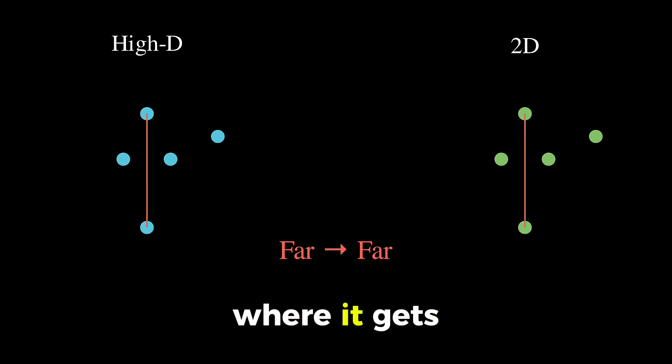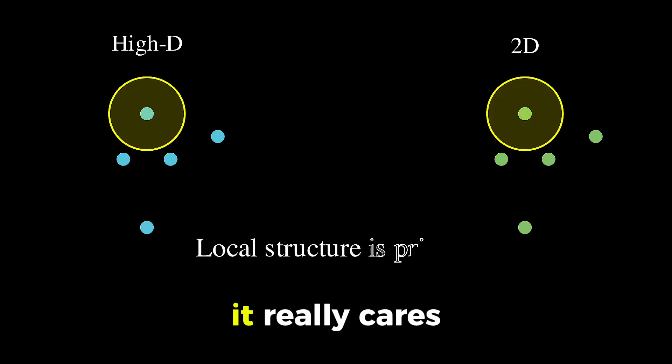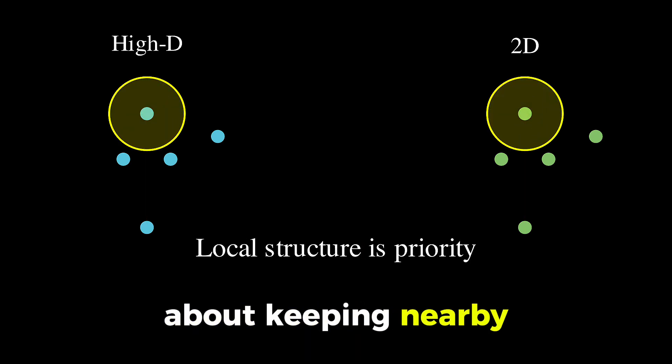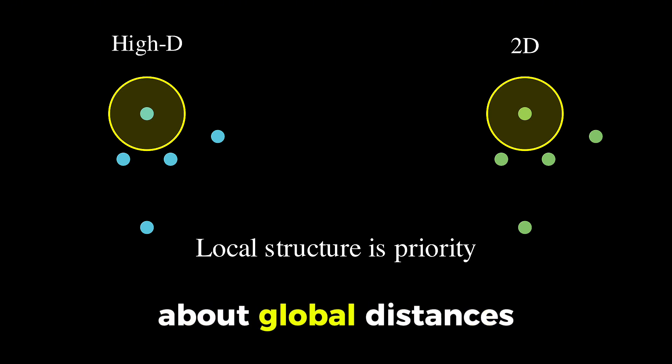But here is where it gets tricky. You can't perfectly preserve all distances when you go from say 100 dimensions down to just two. So, t-SNE makes a choice. It focuses primarily on preserving local structure, meaning it really cares about keeping nearby points together while being a bit more flexible about global distances.